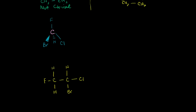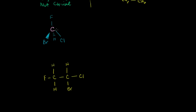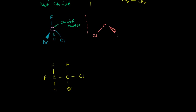Now let's go to this molecule: bromochlorofluoromethane. Just to practice our naming a little bit. It's very clear that we are bonded to four different groups — all the atoms bonded to this carbon are different. So this carbon is a chiral center.